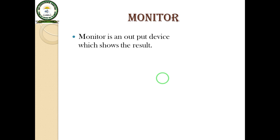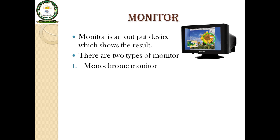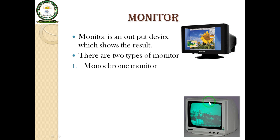Monitor. Monitor is an output device which shows the result on its screen. There are two types of monitor. The first one is monochrome monitor — 'mono' means one or single, and 'chrome' means color, so it means a one-color monitor. A monochrome monitor shows the result in only one color, that means black and white. That's why we call it a black and white monitor.